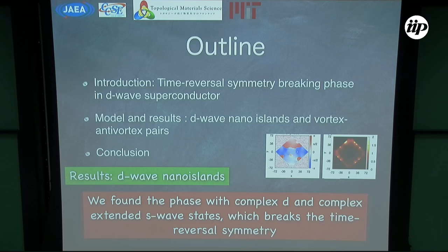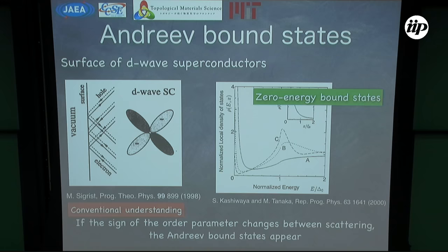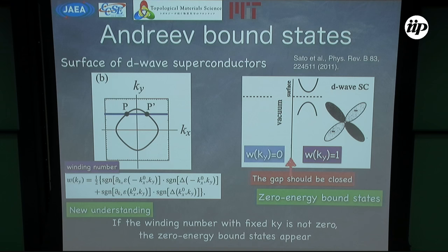As you know, there are Andreev bound states around the surface of the d-wave superconductor. For example, this is vacuum, this is the d-wave superconductor — there is a sign change in momentum space in the d-wave superconductor, so if the sign change occurs between scatterings then there are Andreev bound states. This is the density of states as a function of energy, and we can clearly see the zero energy bound state. This is the conventional understanding of the Andreev bound state.